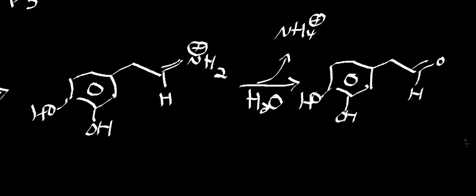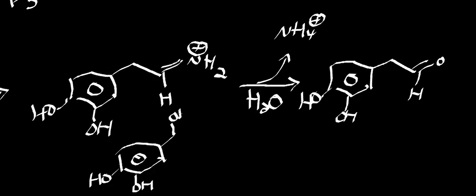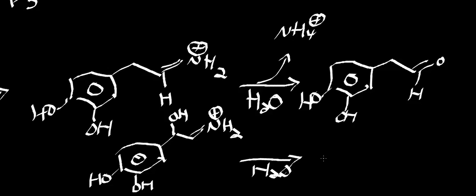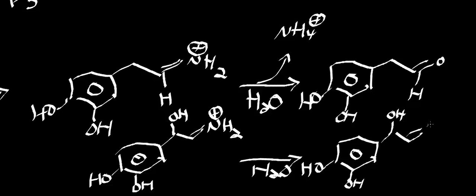Let's do one more example. Instead of starting with dopamine, I start with norepinephrine. Norepinephrine looks almost the same as dopamine except there's a hydroxyl group at the beta position, added by dopamine beta-hydroxylase. If I do Schiff base hydrolysis, the catechol ring stays the same, and I get an aldehyde. The leaving group is again just ammonia. So a key feature of monoamine oxidase is that it produces aldehydes.